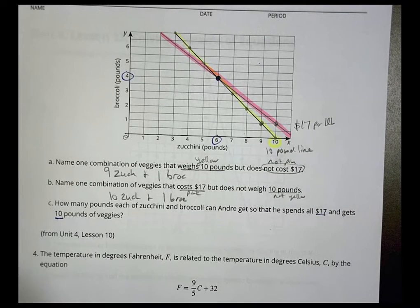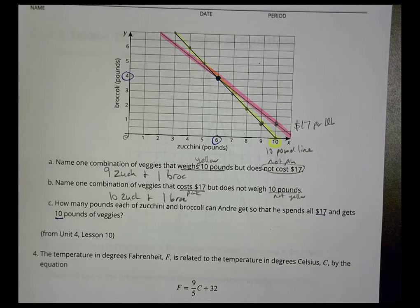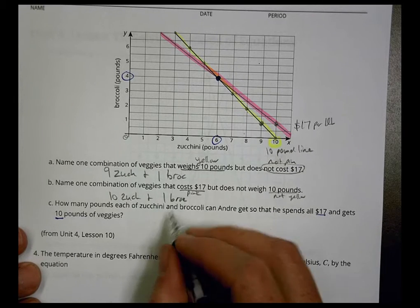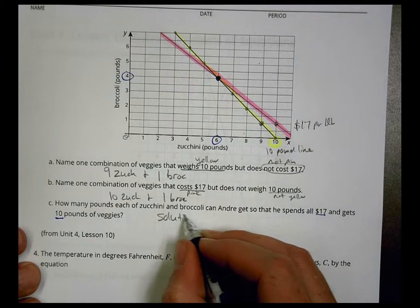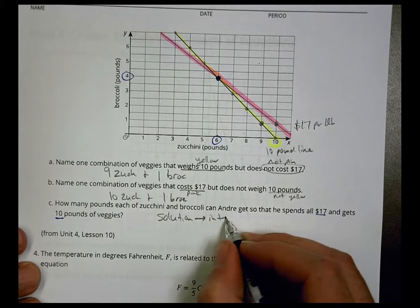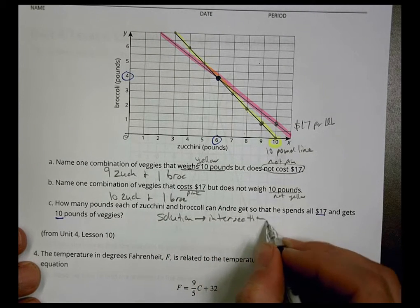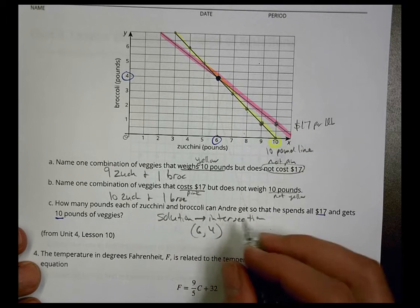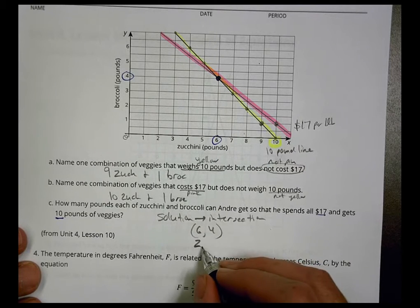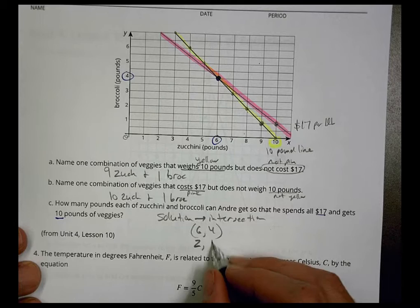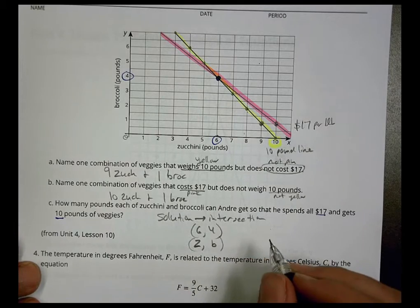We would say that the combination that would work best for him to spend all $17 and have a combination is at that solution, or what we call the intersection, which is at 6, 4. And 6 is going to be for the zucchini and the 4 is for the broccoli.